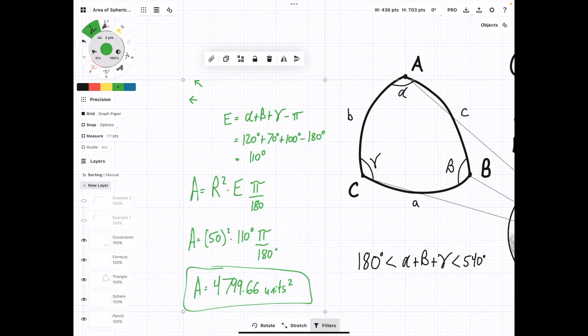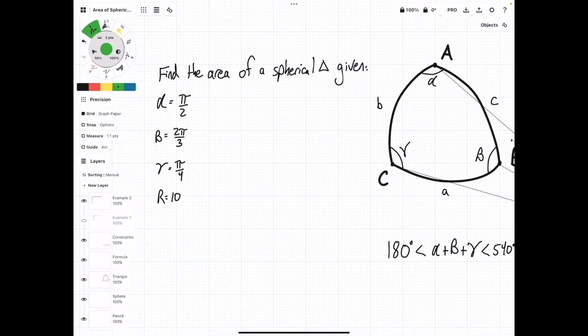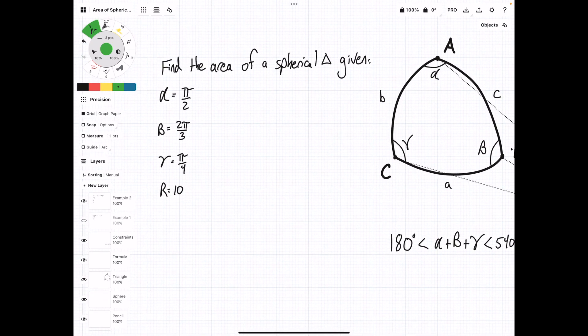Now, what we can do is clean this up, and then we'll look at another one. In this case, we're asked to find the area of a spherical triangle, given that alpha is equal to pi over 2, beta is equal to 2 pi over 3, and gamma is equal to pi over 4, with a radius of 10. In this case, we're given radians for the angles, so we don't have to do any special conversion.